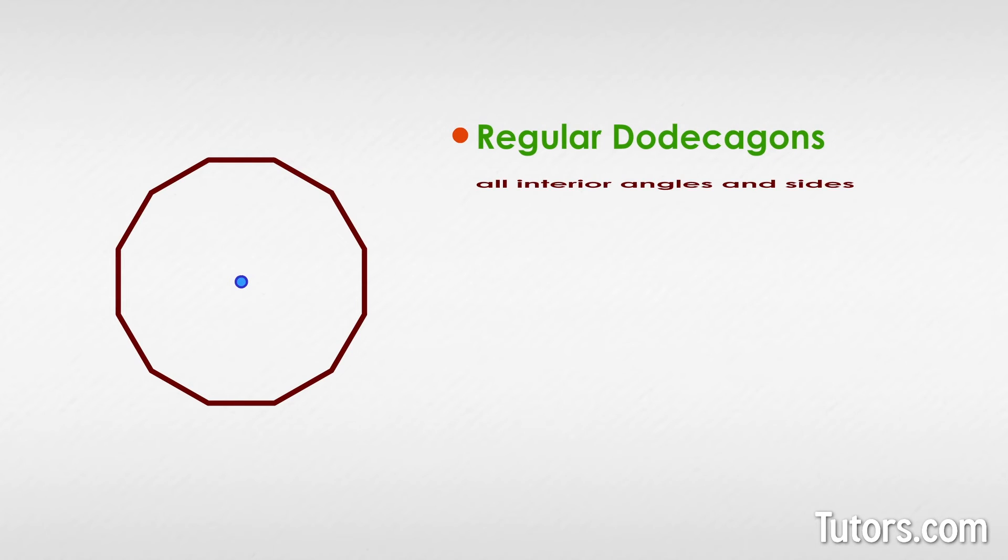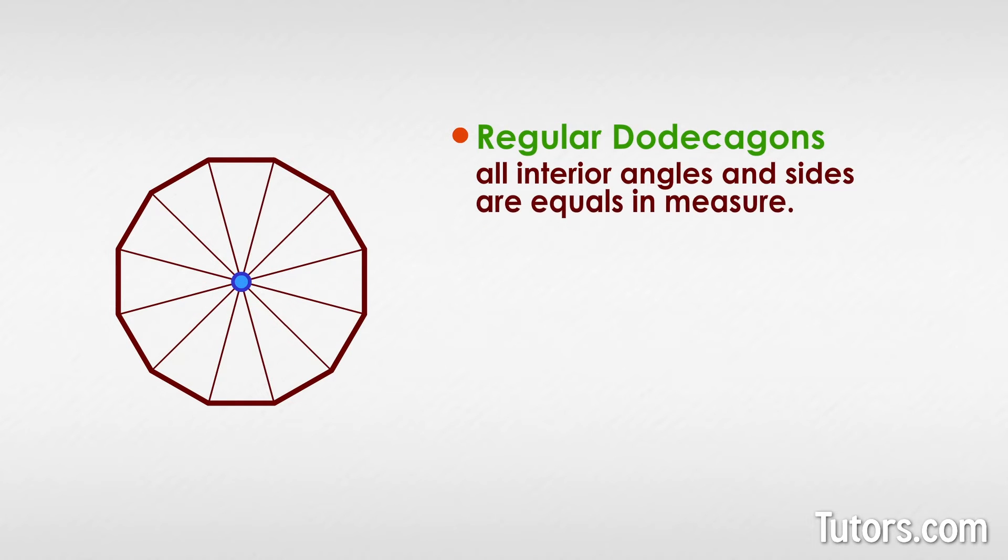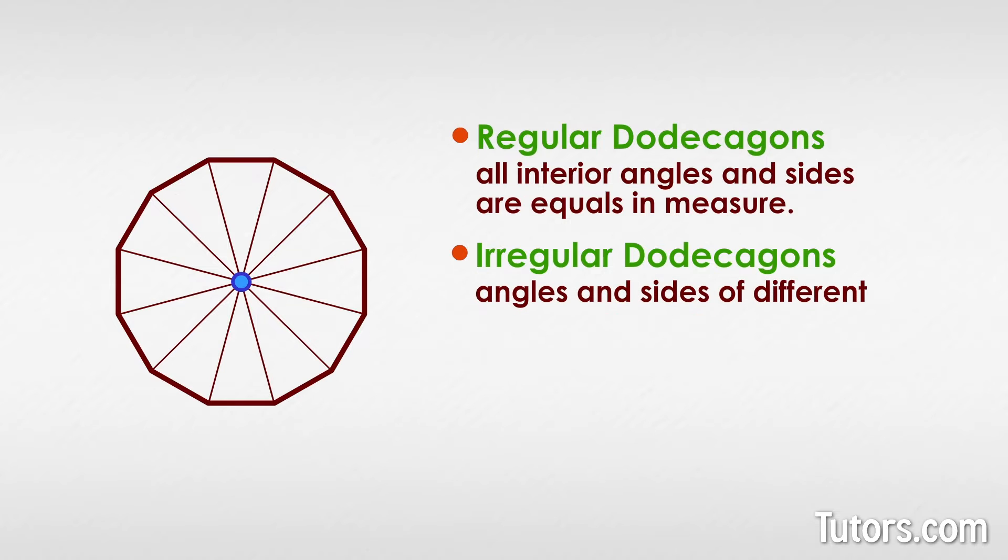Dodecagons can be regular, meaning all interior angles and sides are equal in measure, or they can be irregular, with angles and sides of different measurements. The exterior angles of all regular polygons will always add up to 360 degrees.